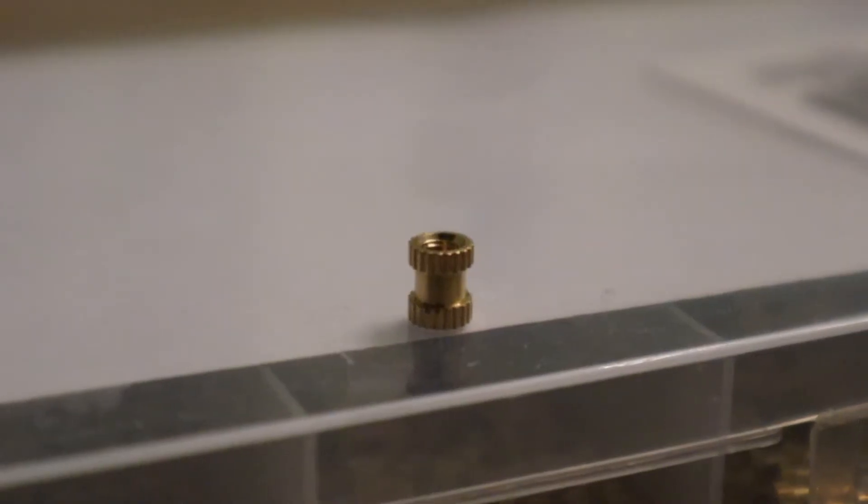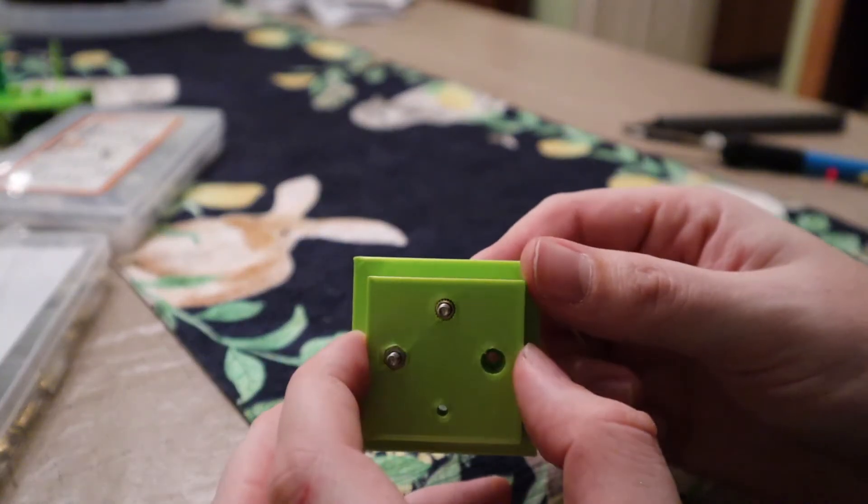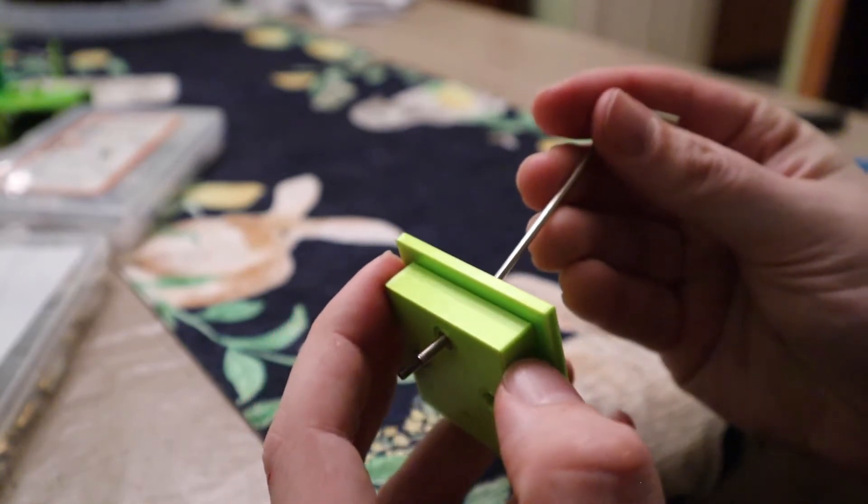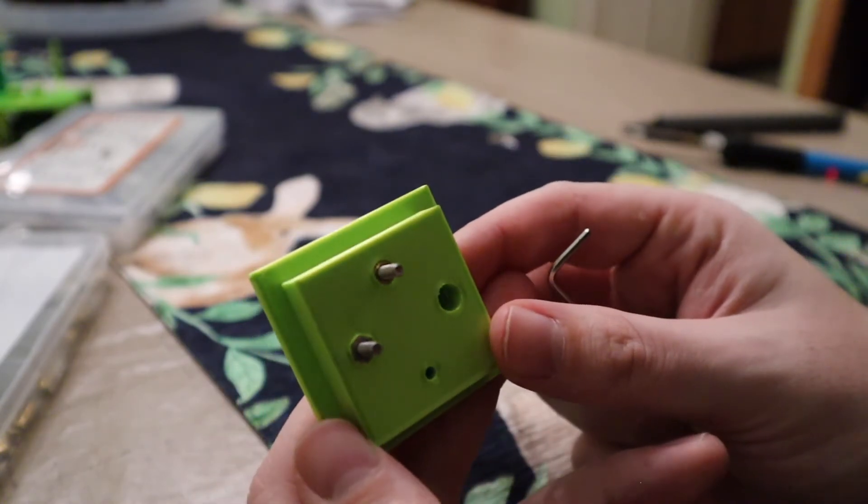And for the last strategy, we have these brass threaded inserts. You could buy a whole case of these on Amazon that range from M3 to I think M5 in different depths. And these are super useful. And you can use the same soldering iron technique to put them into the plastic. Once again, a very solid option. This isn't coming out of the plastic and you could probably pull it through the plastic by tightening it and cranking it down on it. So there we go. That's the second strategy worked out.